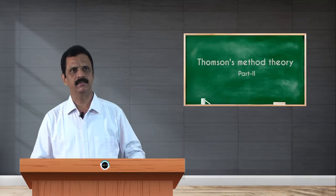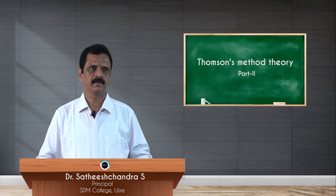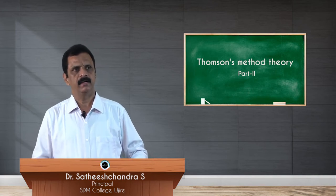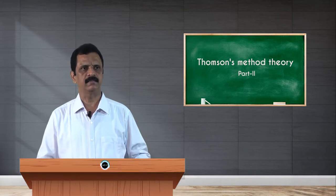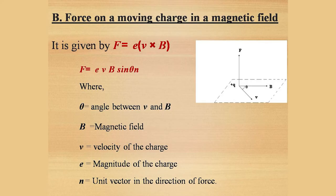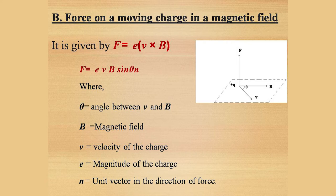Force on a moving charge in a magnetic field. The force experienced by a moving charge in a magnetic field is given by f equals e into v cross b, that is f equals e into vb sin theta n-cap, where theta is the angle between v and b — the velocity of the charge particle and the magnetic field. B is the magnetic field, v is the velocity of the charge, e is the magnitude of the charge, and n is the unit vector in the direction of force.